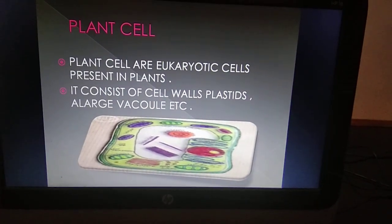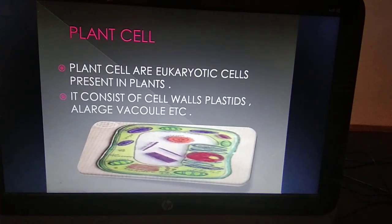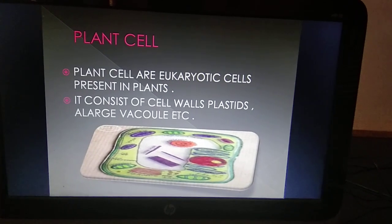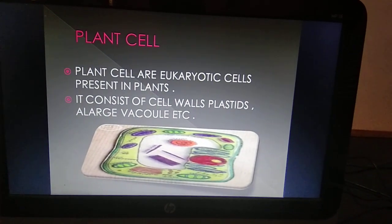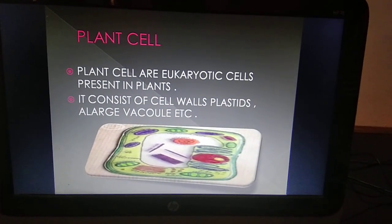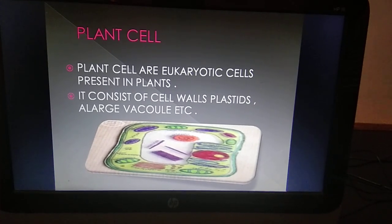Our next topic is plant cell. What are plant cells? Plant cells are eukaryotic cells present in plants. They consist of cell walls, plastids, a large vacuole, etc.